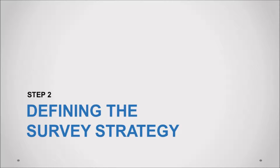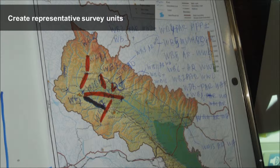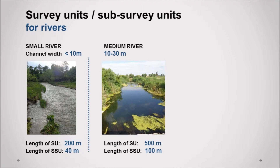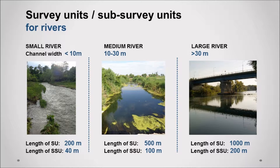Step 2: Defining the survey strategy. Based on results obtained beforehand, a representative survey unit should be established on the selected stretch of river. This survey unit forms the basis of the hydromorphological survey. The main survey unit should be subdivided into five sub-survey units spaced equally apart. The exact range of the survey unit should accurately reflect the river's morphological characteristics. The lengths of survey units and sub-survey units are scaled according to the river's size. Survey units should be 200 meters, 500 meters, 1 kilometer, or of variable lengths according to the degree of morphological uniformity and modification.